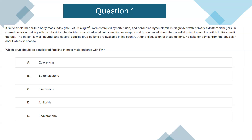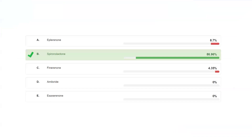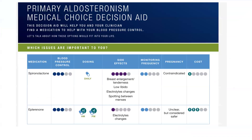Should we use eplerenone? Should we use spironolactone? Should we use finerenone, amiloride, or esaxerenone? The correct answer is spironolactone. In terms of blood pressure control, both spironolactone and eplerenone are equally potent. In terms of dosing, spironolactone is once-daily dosing, whereas eplerenone is short-acting and needs twice-daily dosing.